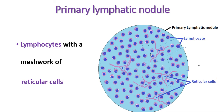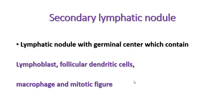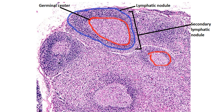The primary lymphatic nodule has no germinal center — no light-staining area at the center — and is mainly formed by lymphocytes with reticular cells in between. The secondary lymphatic nodule contains a germinal center with lymphoblasts, follicular dendritic cells, macrophages, and mitotic figures. In this histological slide of the lymph node, the outer cortex contains lymphatic nodules with a light-staining germinal center, confirming these are secondary lymphatic nodules.